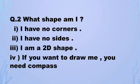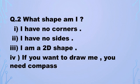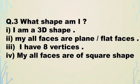The second question: What shape am I? I have no corners, I have no sides. I am a 2D shape, and if you want to draw me you need a compass and a pencil. So what shape am I? You have to answer.